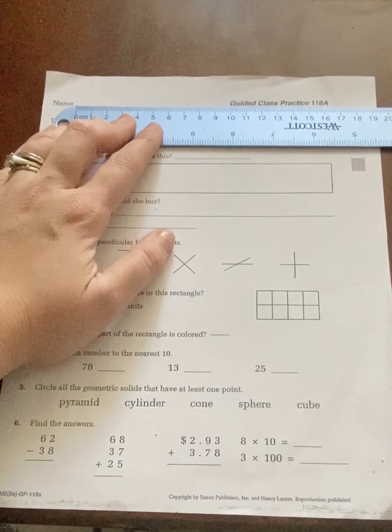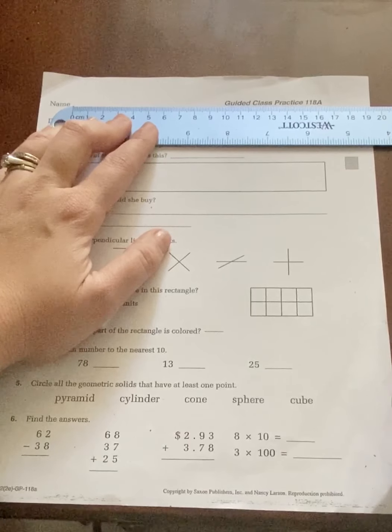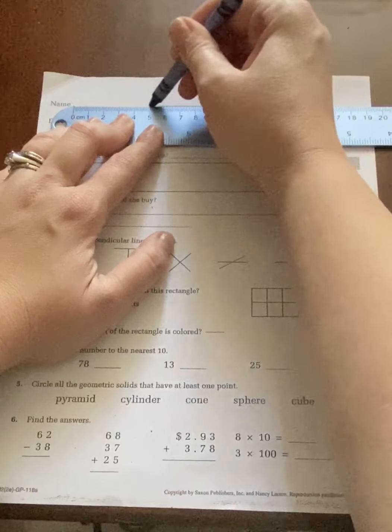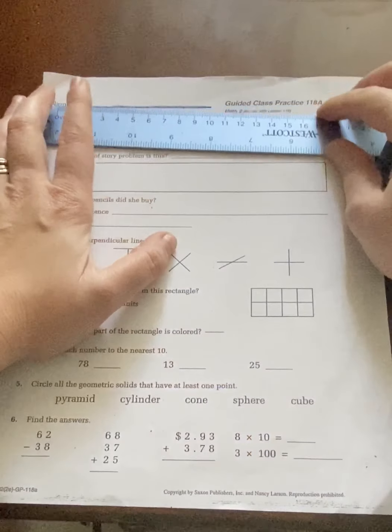And then what number are we going to stop at if it says 9 centimeters? Yes, at the 9. So I'm going to go ahead and actually go to my 9 and then draw up to my 0.